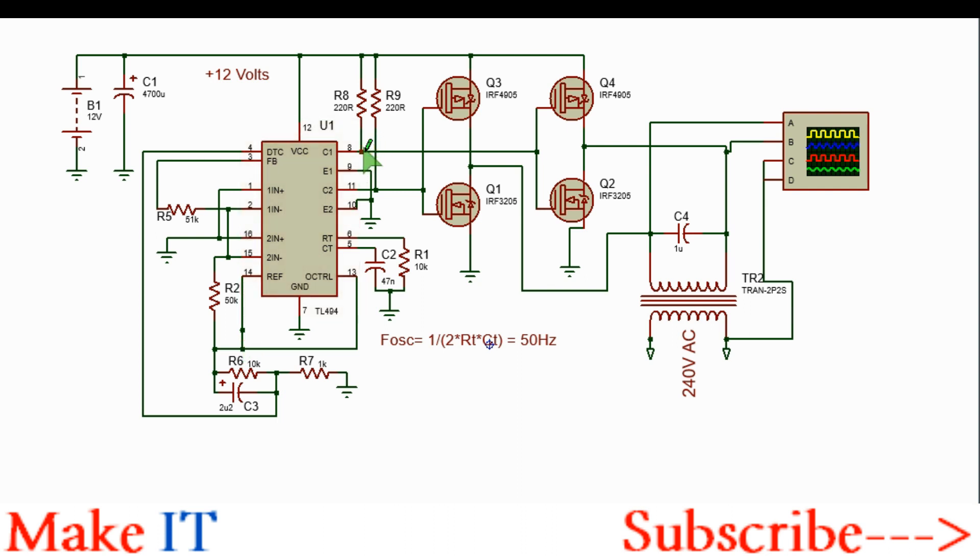They are high and low in complementary fashion. So when pin 8 is high and pin 11 is low, Q3 and Q2 will conduct and so current will flow from the 12 volt rail through Q3 through the winding of the transformer through Q2 to ground. This makes the first half cycle.